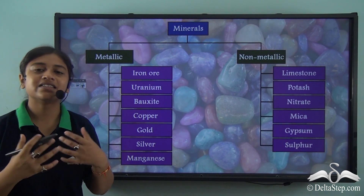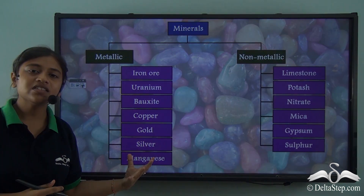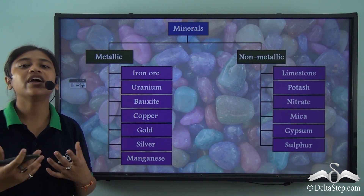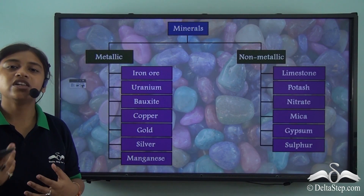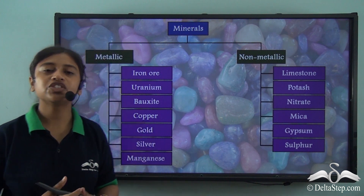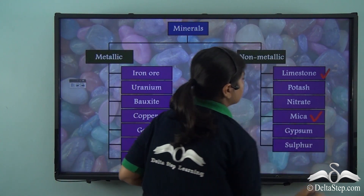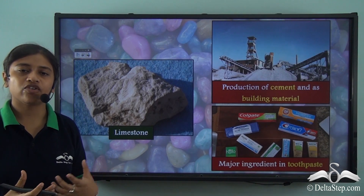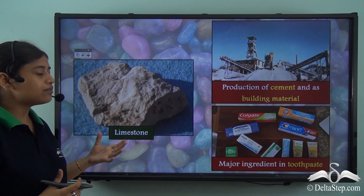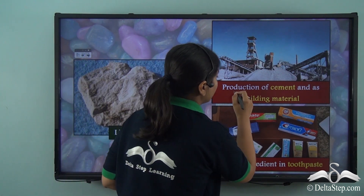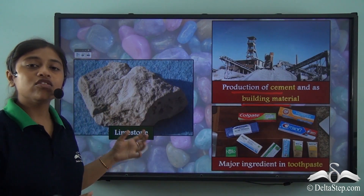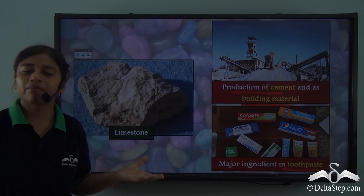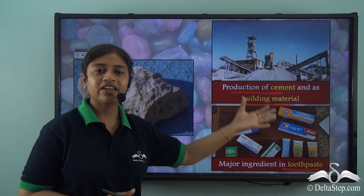So here we completed our discussion on the distribution of metallic minerals, where today we learnt about gold, silver and manganese, their importance and how they are used in different places. We will now continue by taking a look at non-metallic minerals, starting with mica and limestone. Limestone is a sedimentary rock containing the important mineral calcite. It is widely used in the production of cement and as a building material, and is also considered an important ingredient in toothpaste.